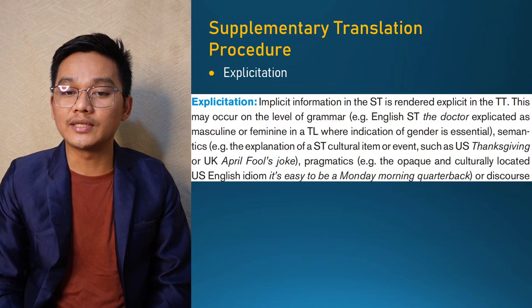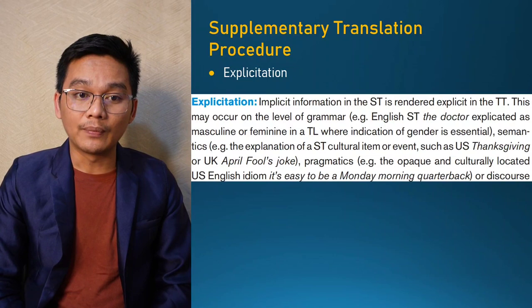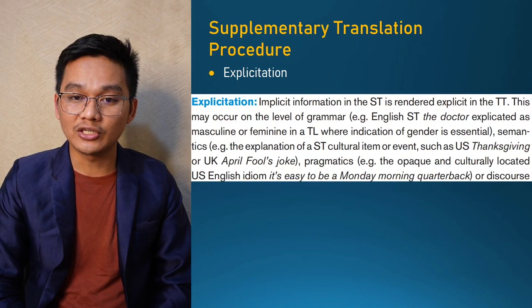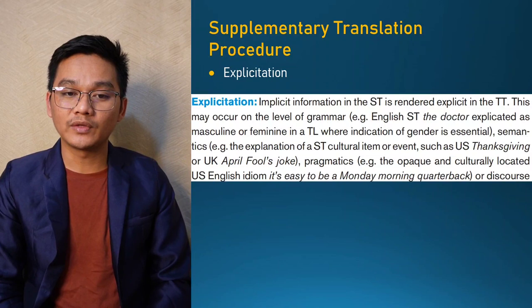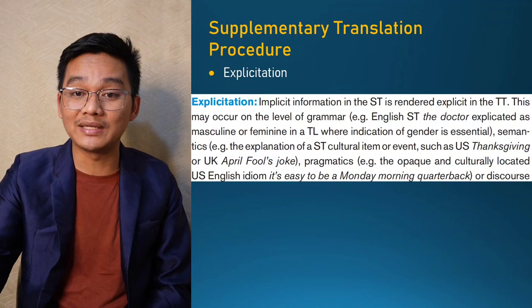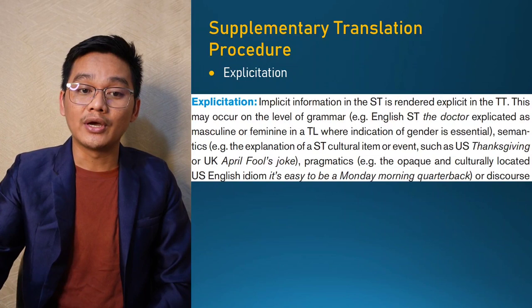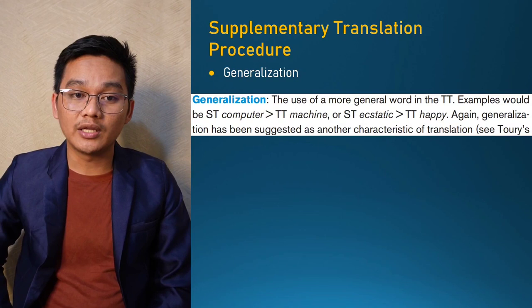Explicitation is when implicit information in the source text is rendered explicit in the target text. This may occur on the level of grammar — for example, the English 'doctor' being explicitated as masculine or feminine in a target language where gender indication is essential. It can also occur on the level of semantics, such as explaining a cultural item like U.S. Thanksgiving or a U.K. April Fool's joke, or pragmatics, such as the U.S. English idiom 'it's easy to be a Monday morning quarterback.'